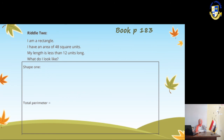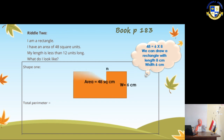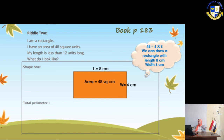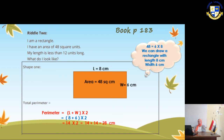Book page 183. Riddle number 2: I am a rectangle. I have an area of 48 square units. My length is less than 12 units long. What do I look like? Shape 1: draw a rectangle with length 8 and width 6, because 6 × 8 = 48. To find the perimeter: (8 + 6) × 2 = 28 cm.